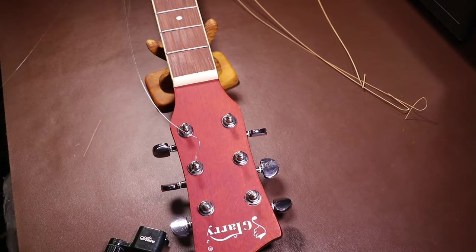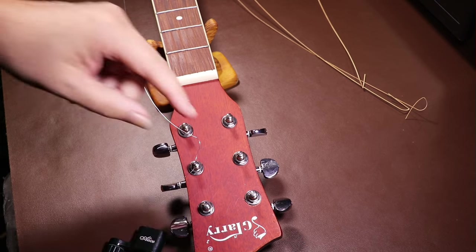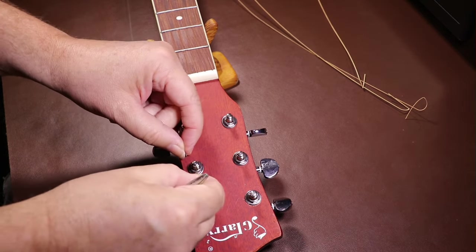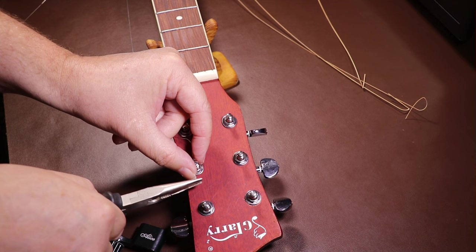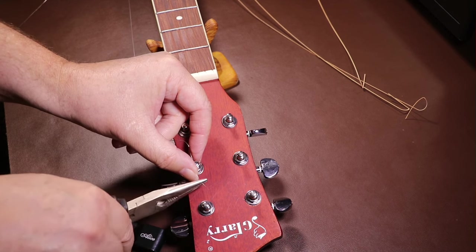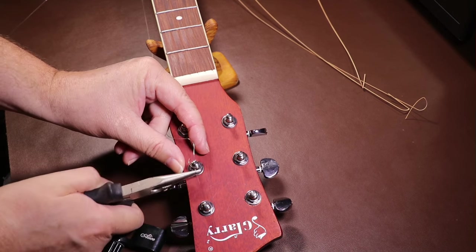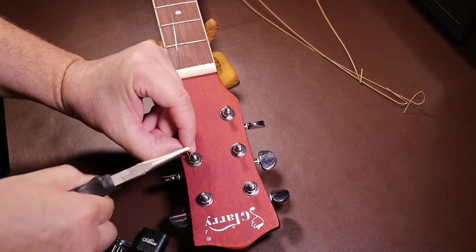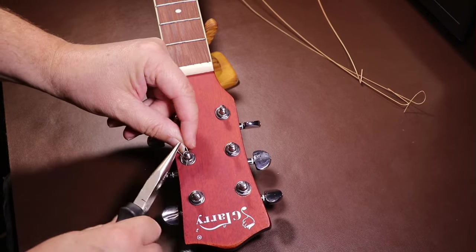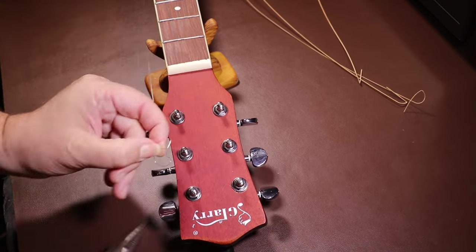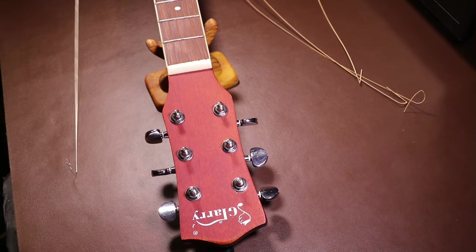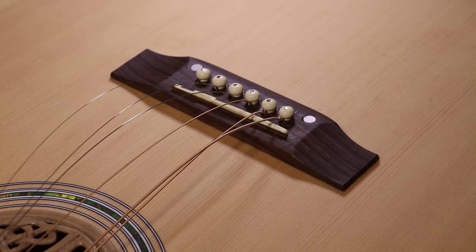It's quite a common occurrence that a string doesn't want to be removed. And if this happens, what I try to do is create a loop and then pull from there and it gets it out. However, if I can't do that, sometimes, in the worst case scenario, you have to cut the string off in little pieces. Once you've removed the strings from the machine heads, you can move down to the bridge end of the guitar to remove the pegs.